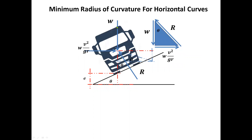As we can see, we have the given weight here which is acting downward to the center of gravity, and then pointing to the right we have W times V squared over gr, where g is the acceleration due to gravity, V is the velocity raised to the second power, and r is the radius in a diagonal position with an angle of inclination along the y-axis, also equal to the angle of inclination with respect to the x-axis. From this point we have a height or depth of e where our vehicle is inclined with an angle of theta.